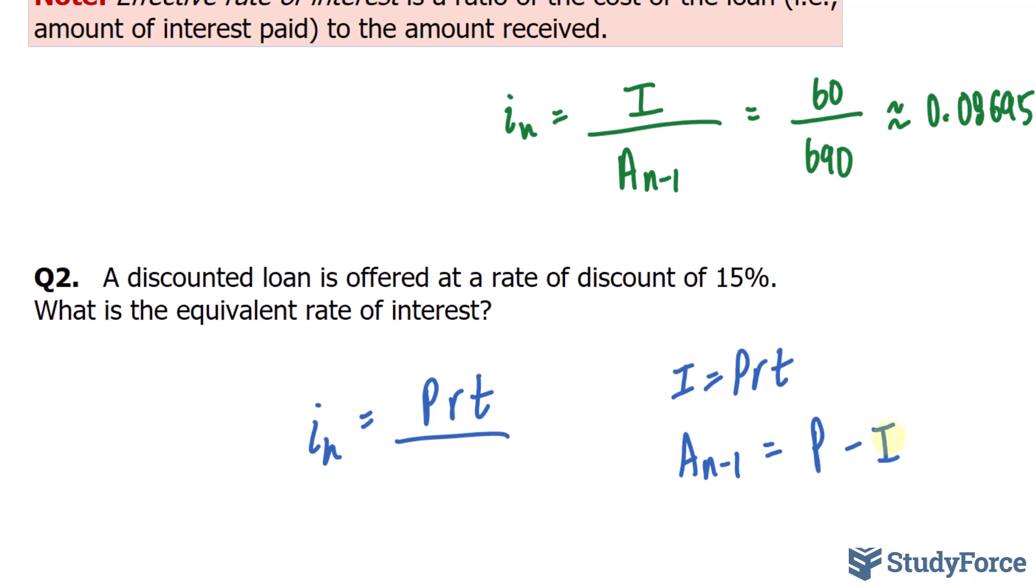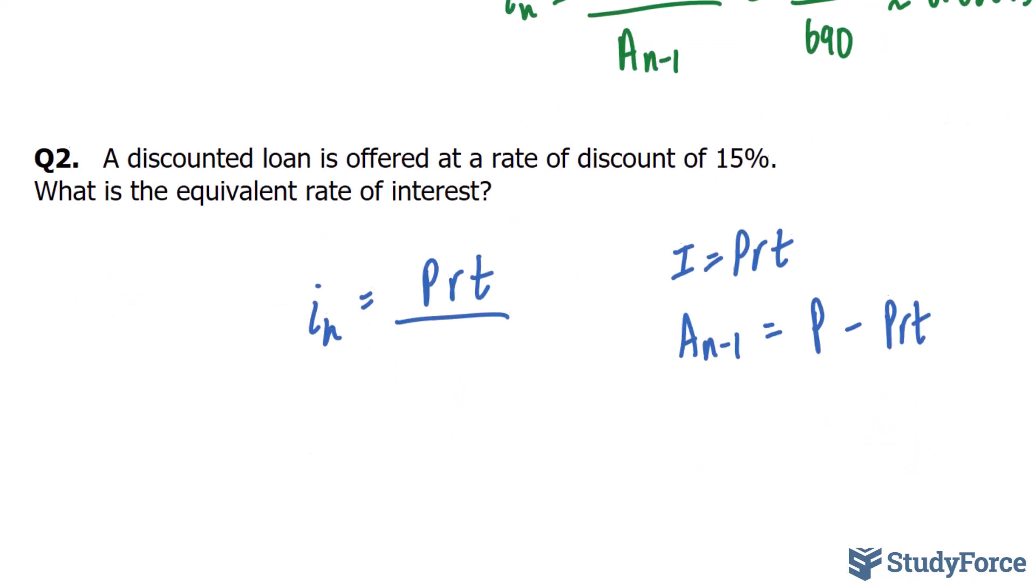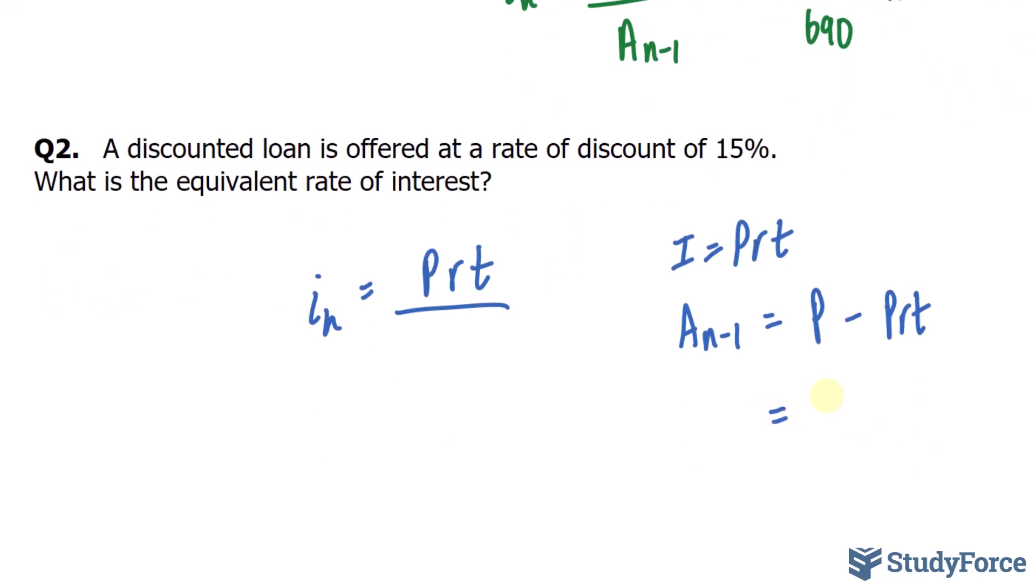And if we replace this I with what it really is, which is P, R, T, we end up with, if we common factor a P, we get 1 take away R, T. Let's substitute this into here, and we end up with P bracket 1 take away R, T. Notice that the factor P can be cancelled out, since it is common at the top and at the bottom.